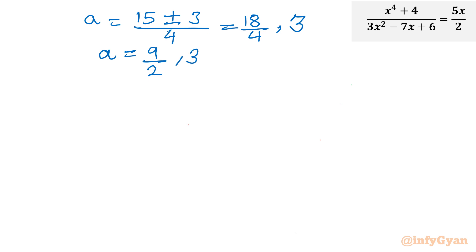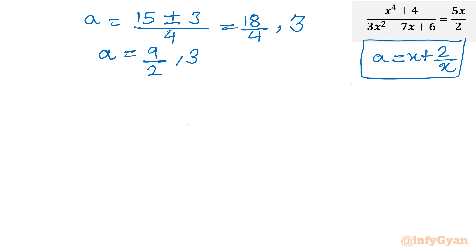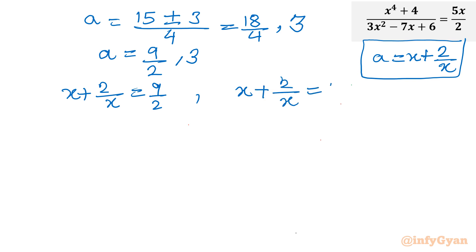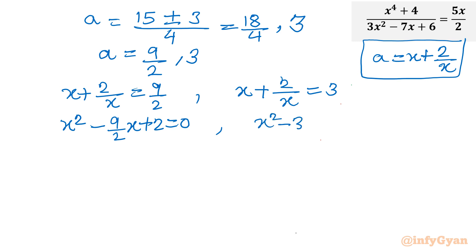Now we put back our substitution. a was x plus 2 over x. For the first value: x plus 2 over x equal to 9 over 2. Multiplying by x: x square minus 9 over 2 times x plus 2 equal to 0. For the second value: x plus 2 over x equal to 3. Multiplying by x: x square minus 3x plus 2 equal to 0.